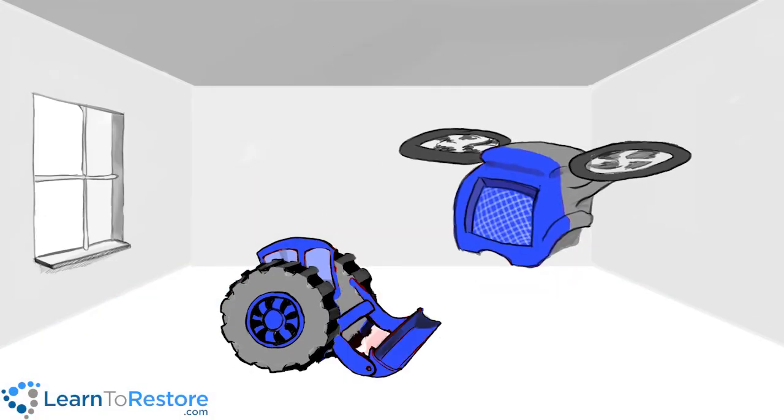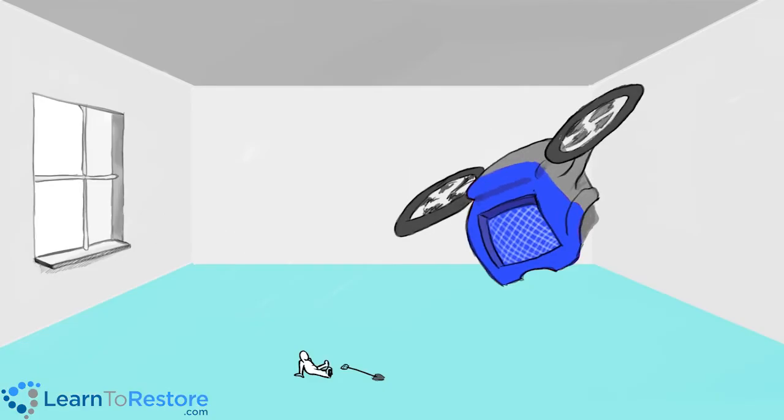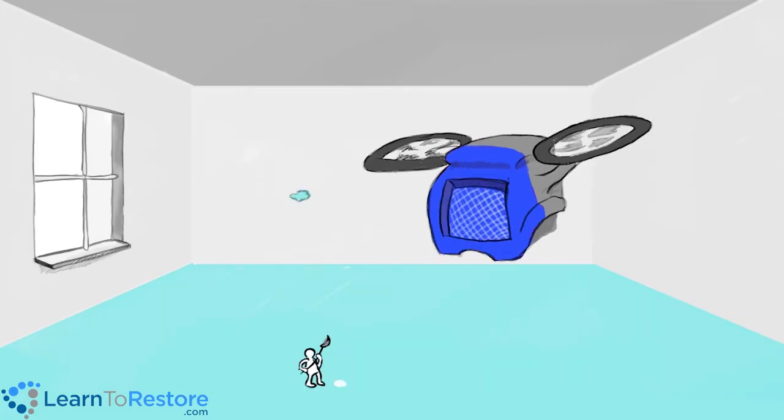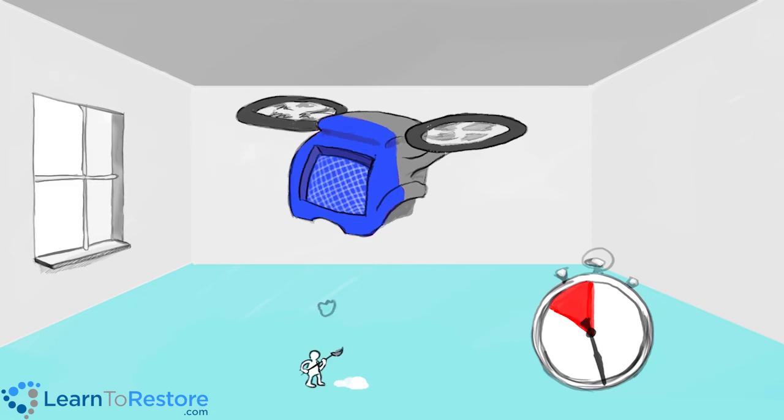If there are not enough airmovers to create evaporation to remove the moisture from the materials, it will migrate to other areas, resulting in secondary damage. Score Water Damage 1, Restorer 0. And he worked so hard.